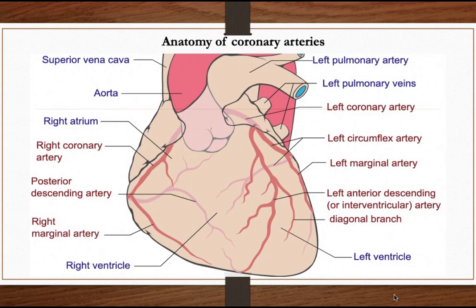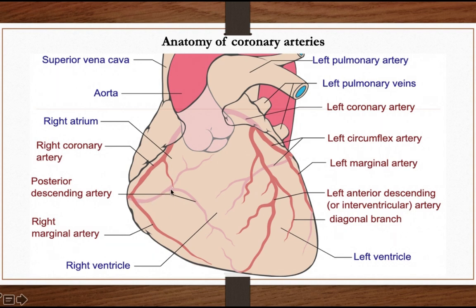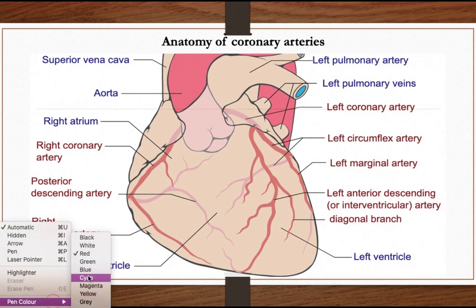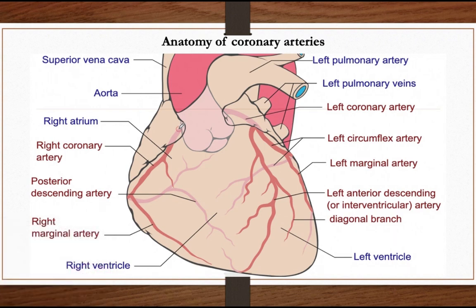Looking at the anatomy of the coronary arteries, we have two major arteries: the right and left coronary arteries, which arise from the aorta. The right coronary artery arises from the aorta, crosses the coronary sulcus anteriorly, then moves posteriorly. Importantly, the right coronary artery may give a branch to supply the sinoatrial node — the SA nodal artery.